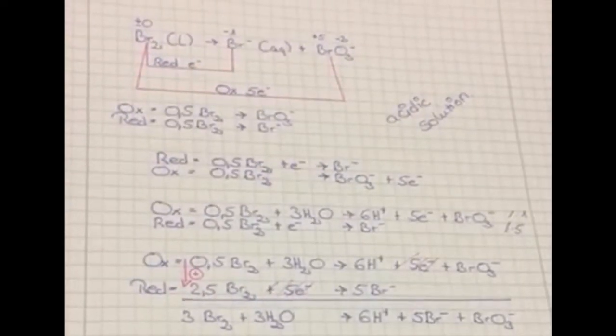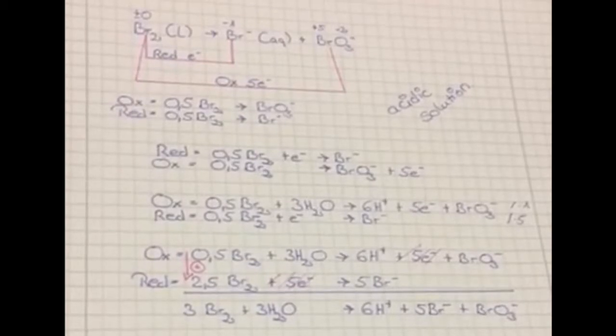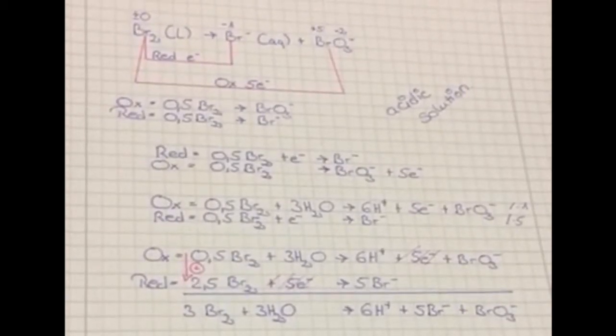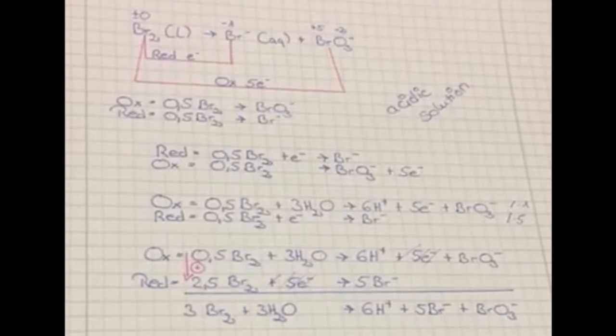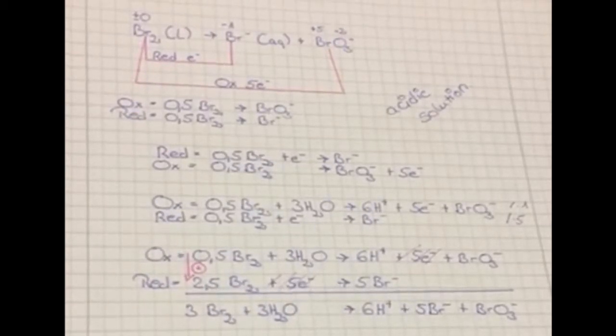First of all, write the reaction down and assign the oxidation number. Bromine has an oxidation number of 0, negative charge bromine has an oxidation number of minus 1, the oxygen of BrO3- has the oxidation number negative 2 and bromine plus 5.